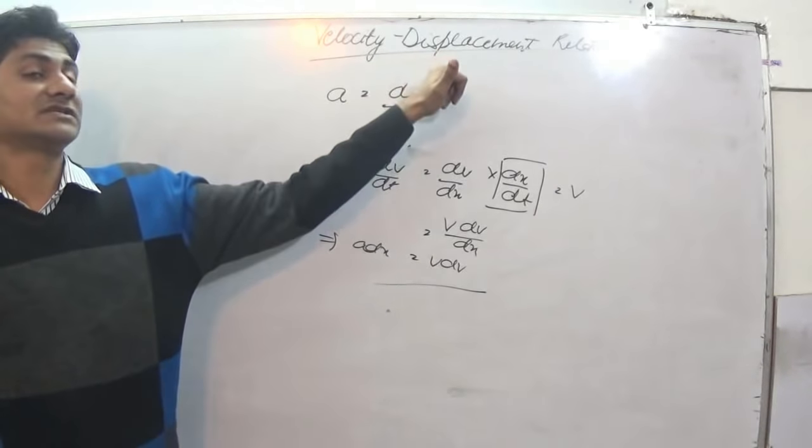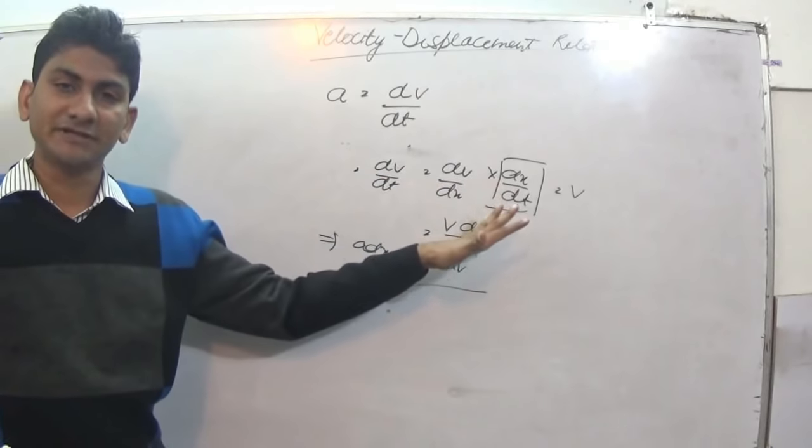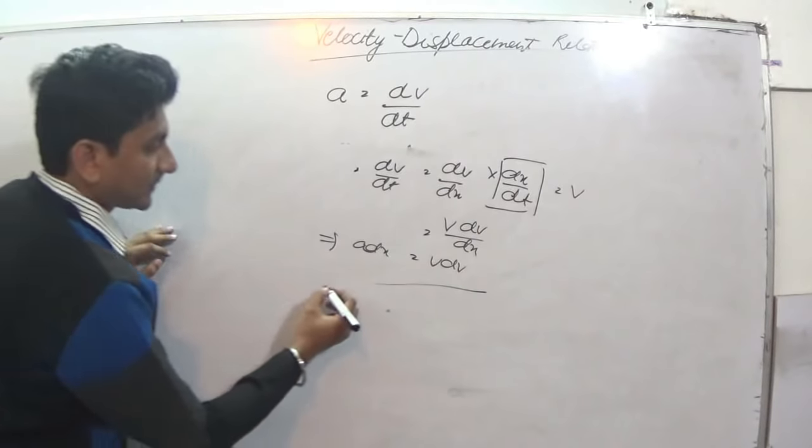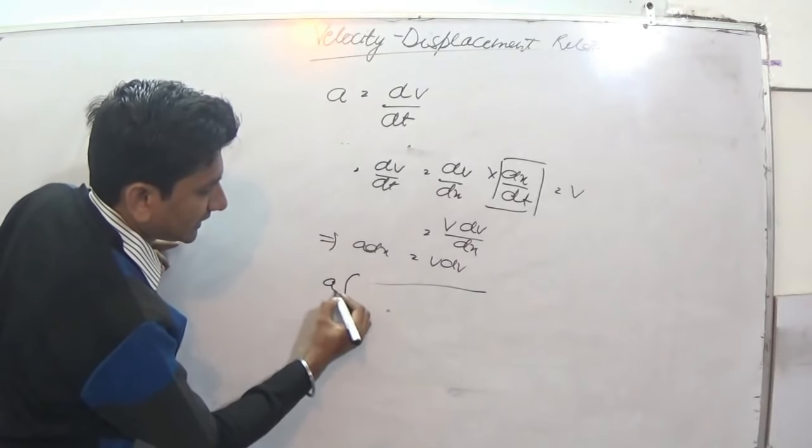Why we did it? We just wanted to eliminate t because we want the relation between velocity and displacement, and time has to be eliminated for that. So integrating both sides, again we get a...